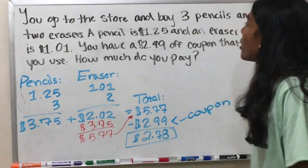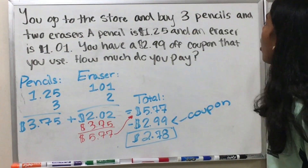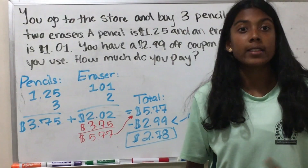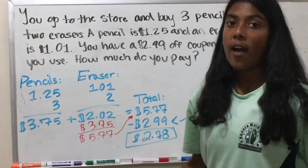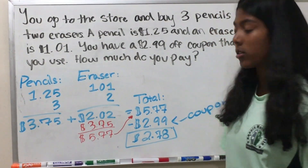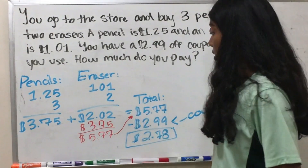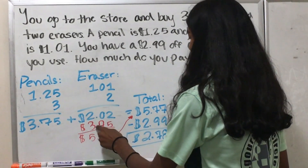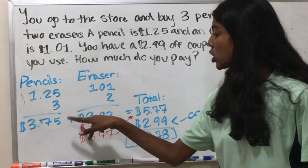Our first word problem: you go to the store and buy 3 pencils and 2 erasers. A pencil is $1.25 and an eraser is $1.01. You have a $2.99 off coupon. How much do you pay? We use multiplication, addition, and subtraction in that order. Each pencil is $1.25 and we're buying 3, so $1.25 times 3 is $3.75. Each eraser is $1.01 and we're buying 2, so $1.01 times 2 is $2.02. Now add these: line the decimal, bring it down — 2 plus 5 is 7, 0 plus 7 is 7, 2 plus 3 is 5 — giving us $5.77.